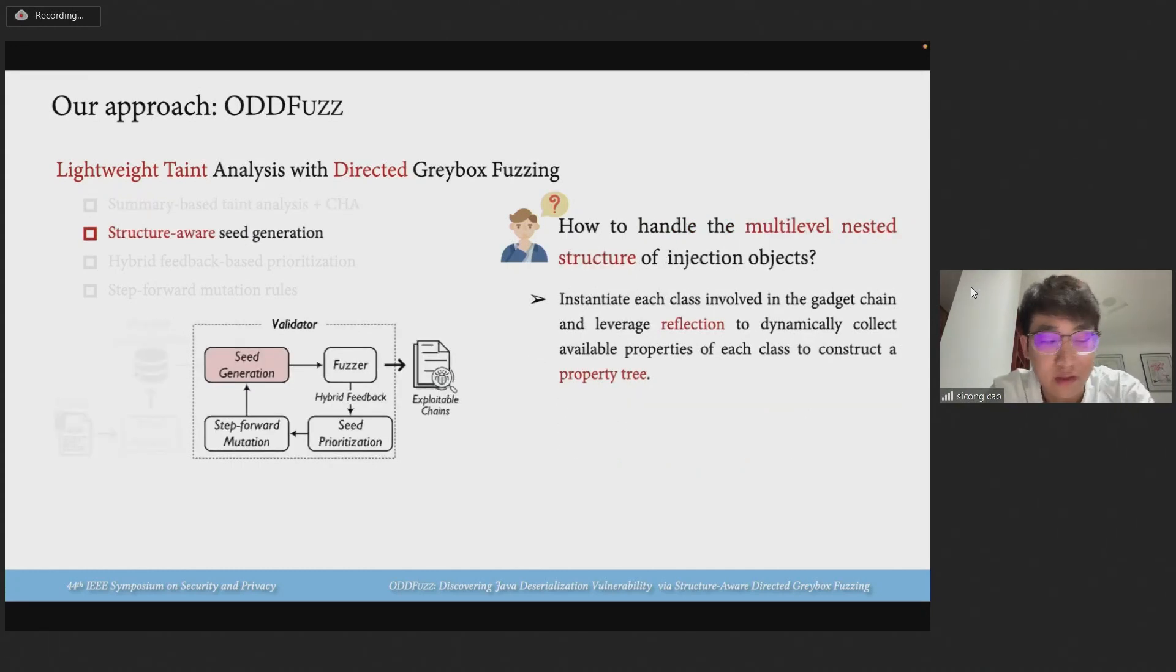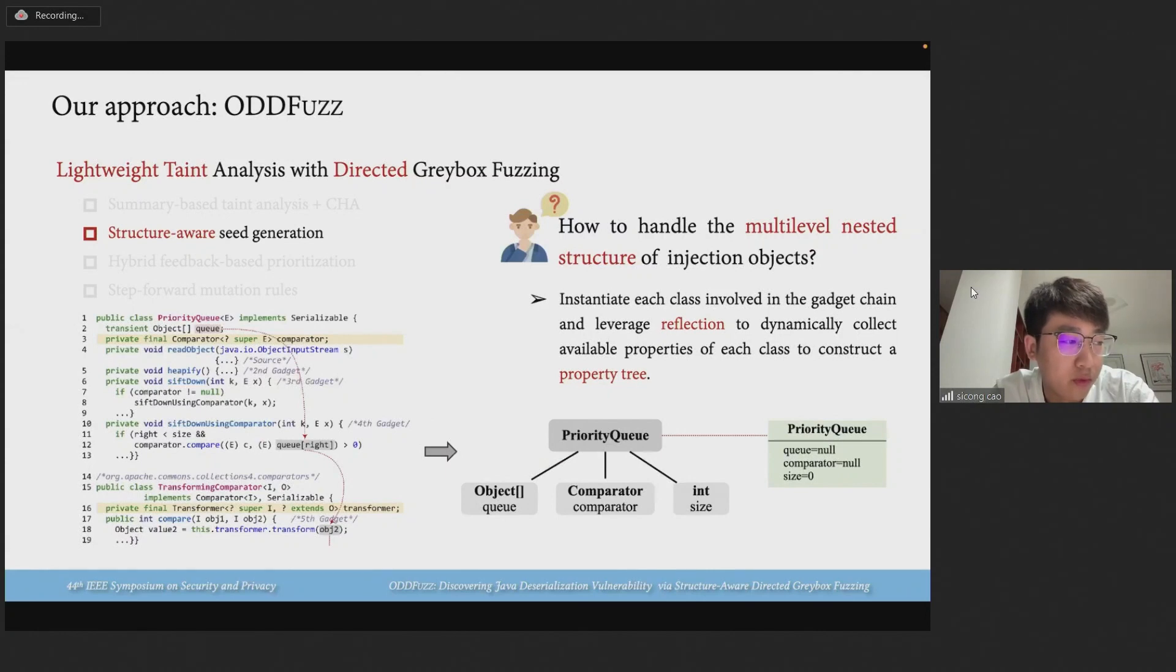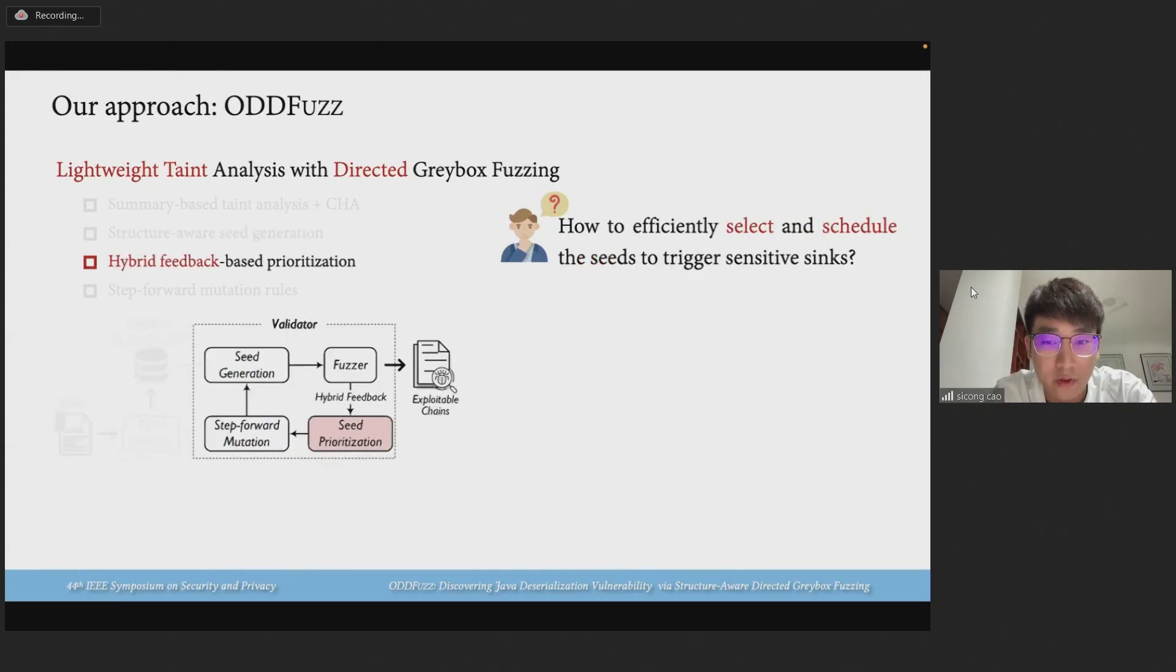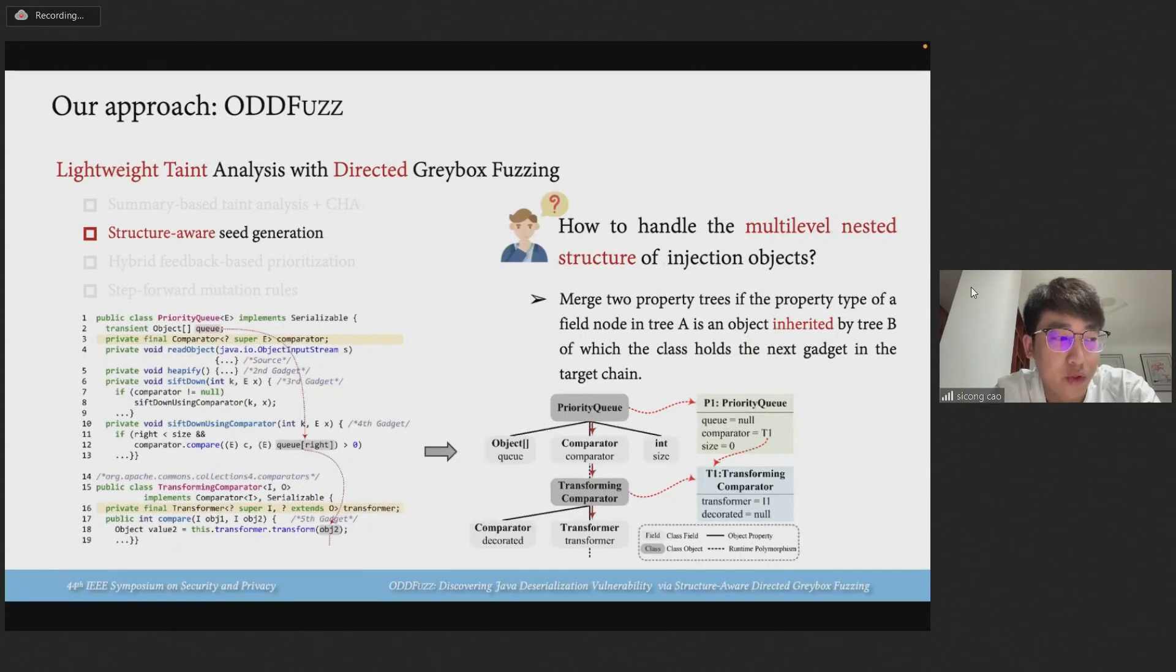Second, heavy use of multi-level nested structures makes gadget chain finding ineffective. We propose a structure-aware seed generation approach. In particular, we instantiate each class involved in the gadget chain and leverage reflection to dynamically connect available properties of each class to construct a property tree. The root node represents a class object that holds one or more gadgets, and the leaf nodes are a series of gadget fields which contain the property type and name. If the property type of a field node in a property tree is an object represented by another property tree whose class holds the next gadget object in the target chain, we merge the two property trees by connecting this field node to its corresponding class object node.